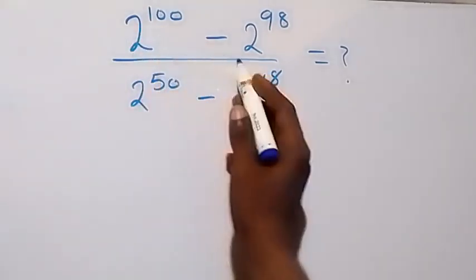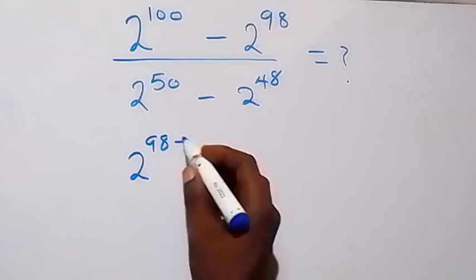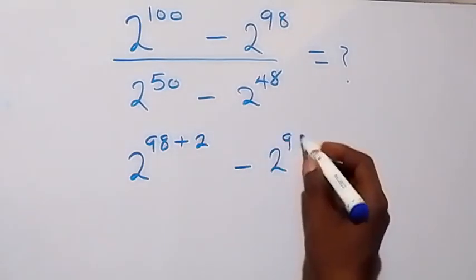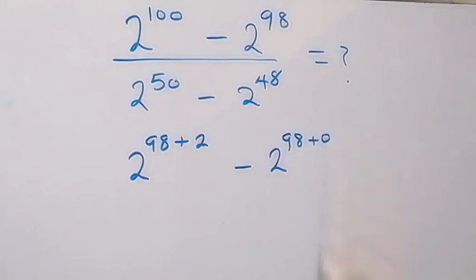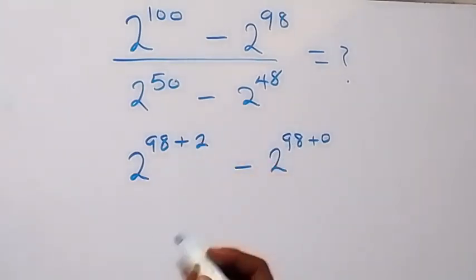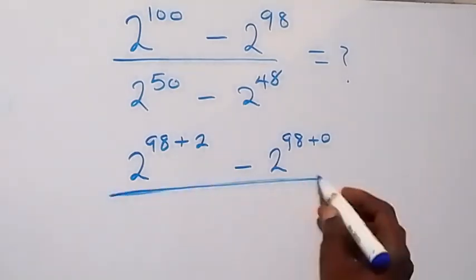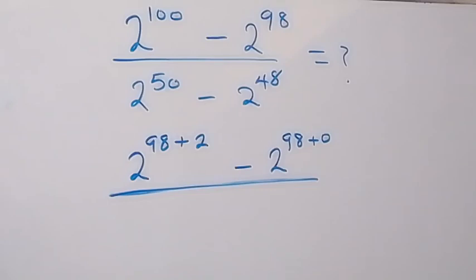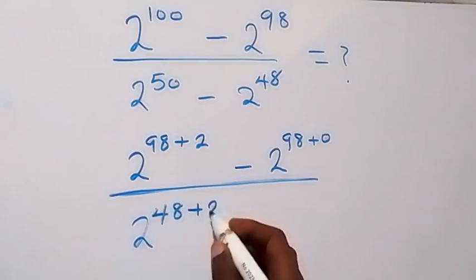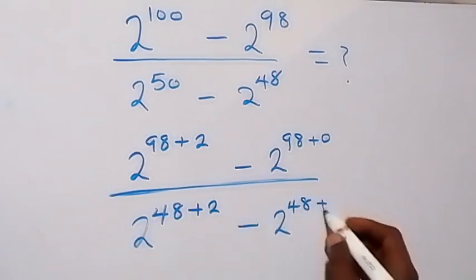From here we can rewrite this and factor 98 out. This will be 2 raised to power 98 times (2 raised to power 2 plus 1), then minus 2 raised to power 98. In the denominator, we can also factor 48 out: that's 2 raised to power 48 times (2 raised to power 2) then minus 2 raised to power 48.